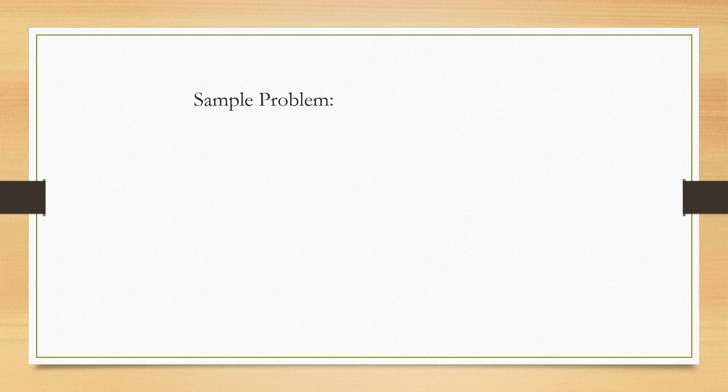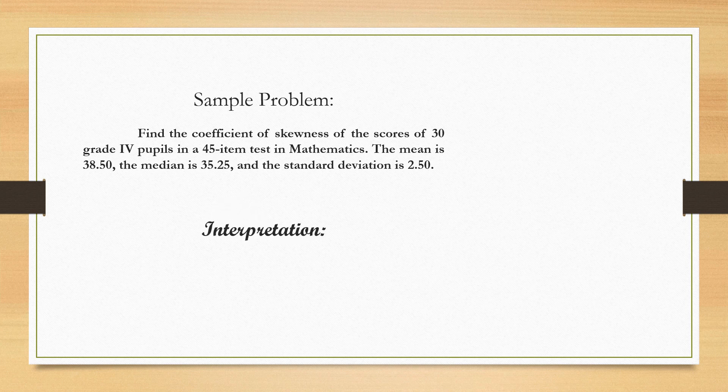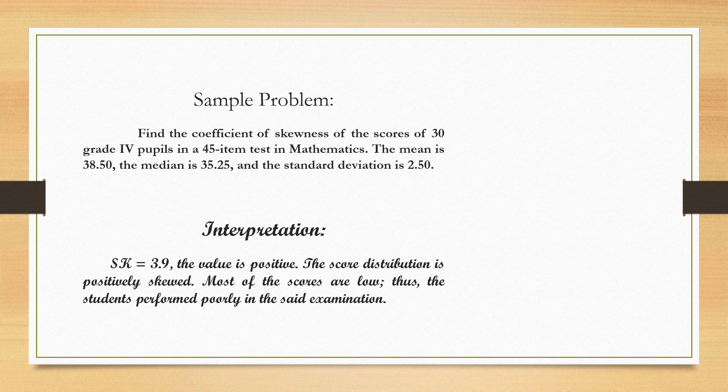What does skewness 3.9 mean? The value is positive. The score distribution is positively skewed. Hence, most of the scores are low. Thus, the students perform poorly in the said examination.